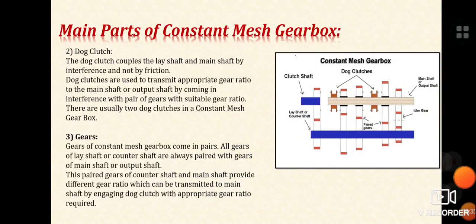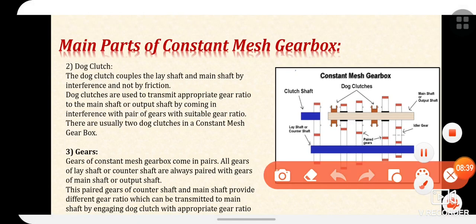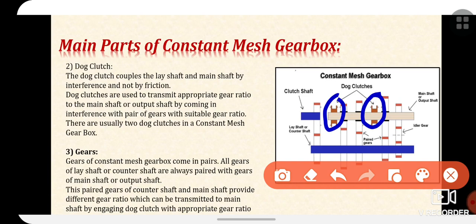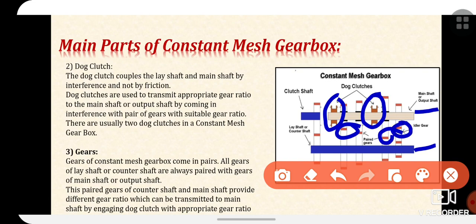Now let's discuss what is a dog clutch. The dog clutch couples the main shaft and the lay shaft by interference, not by friction. Dog clutches are used to transmit the appropriate gear ratio to the main shaft or output shaft by coming into interference with the pair of gears. There are usually two dog clutches in a constant mesh gearbox.